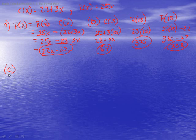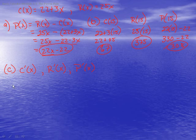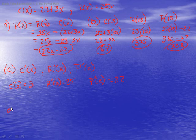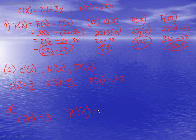Part C asks us to find c'(x), r'(x), and p'(x) — the derivatives of all three functions. All three are straightforward: c'(x) = 3, r'(x) = 25, and p'(x) = 22 using the power rule. Part D asks for c'(15), r'(15), and p'(15). Since none of the derivative functions contain x, c'(15) = 3, r'(15) = 25, and p'(15) = 22.